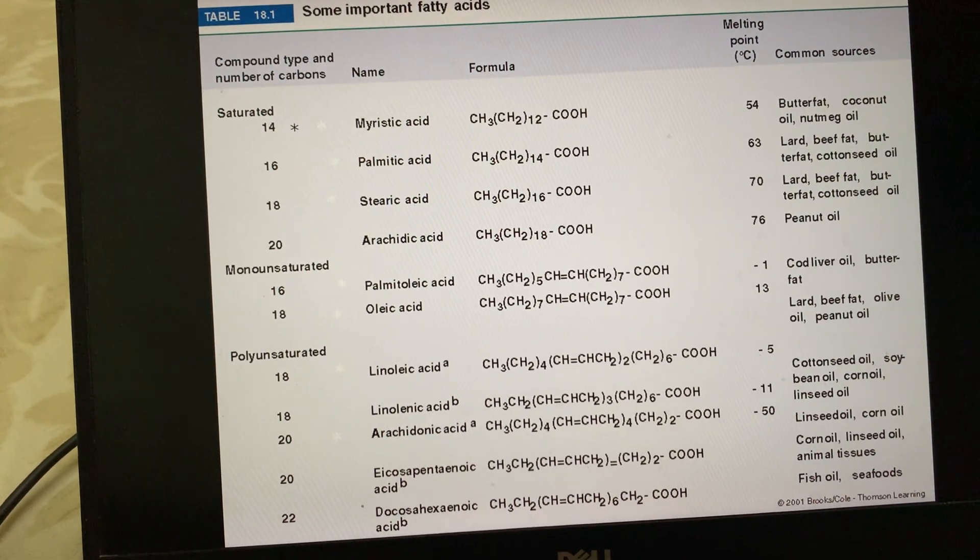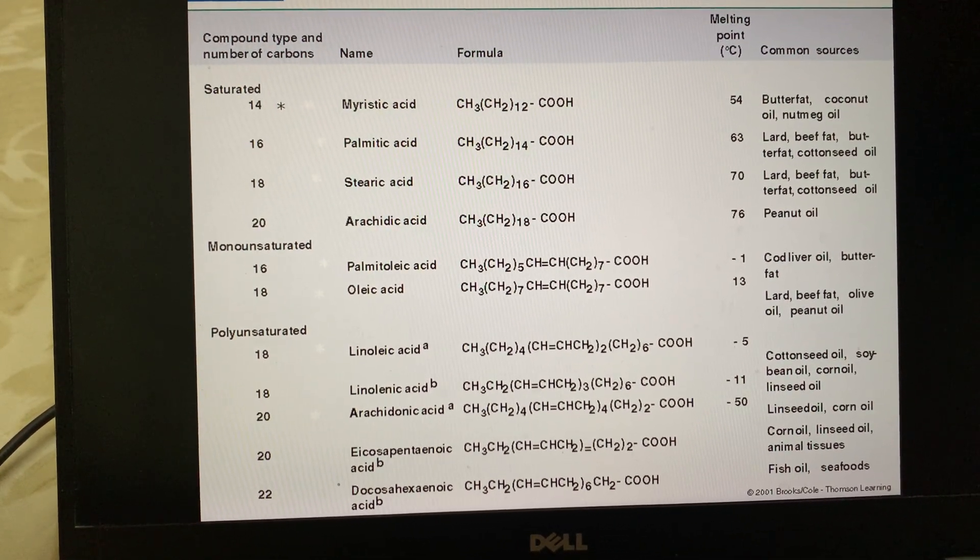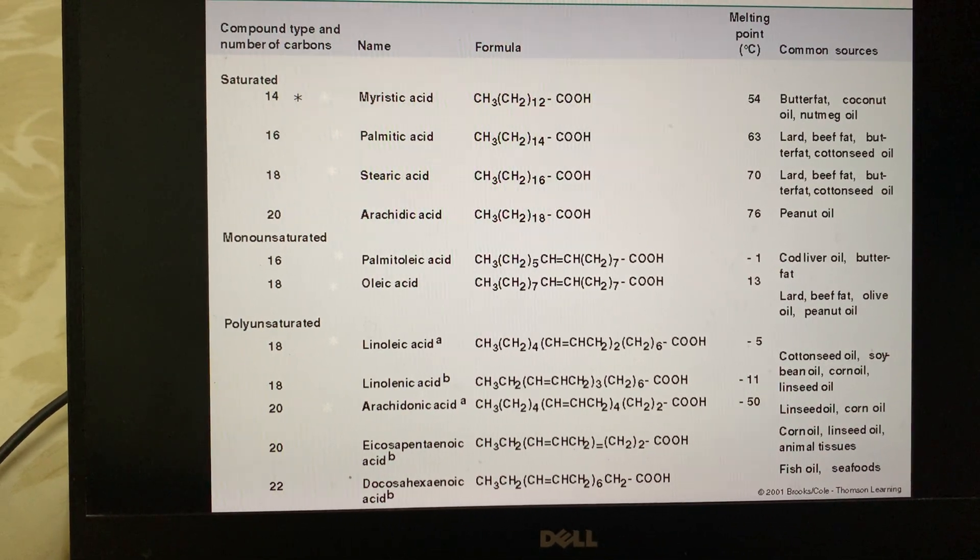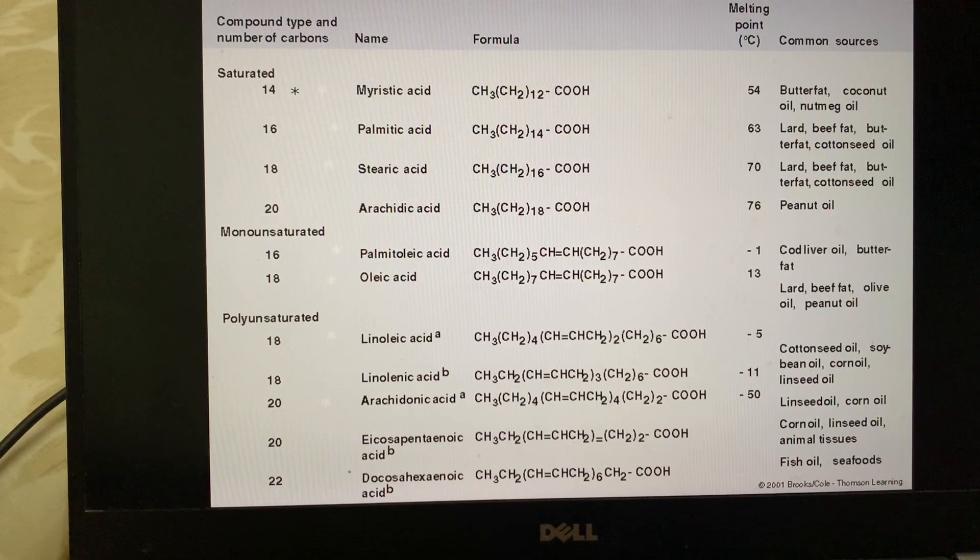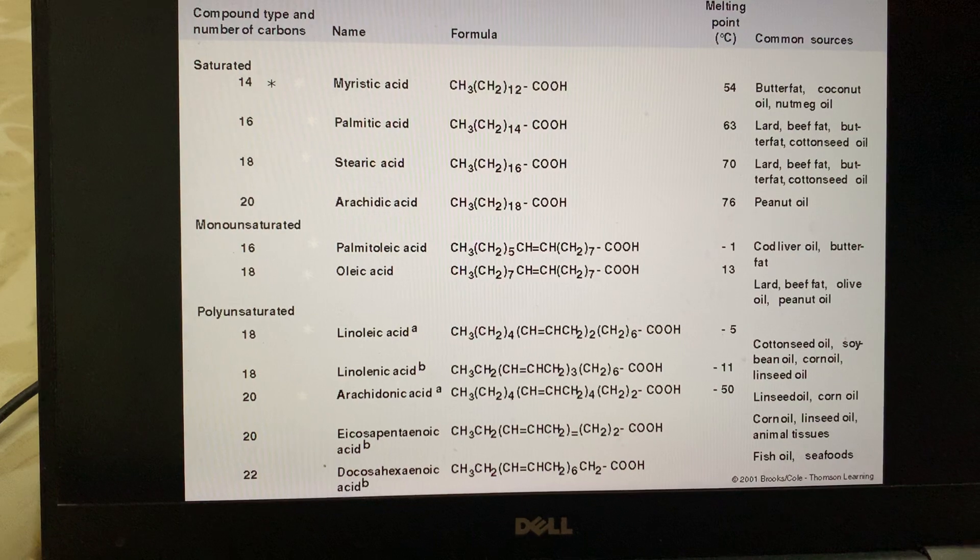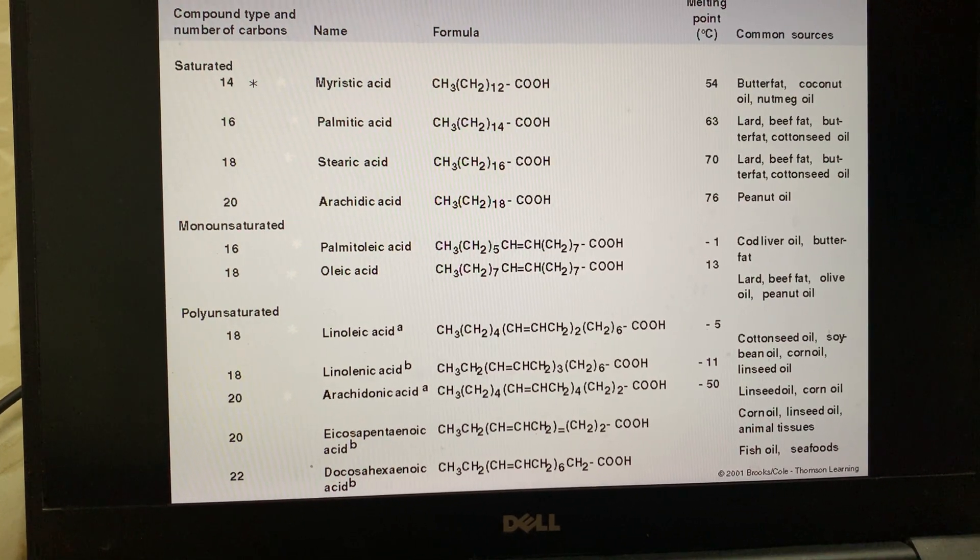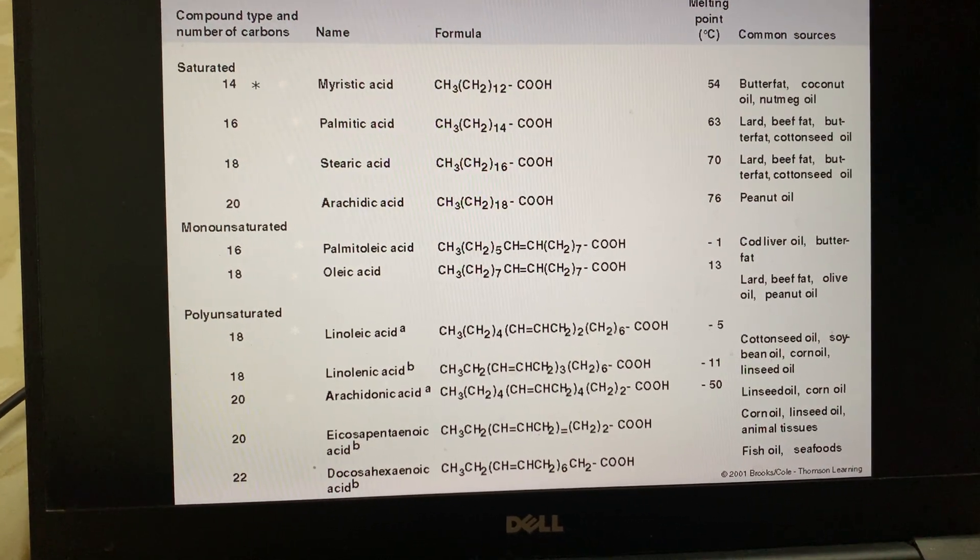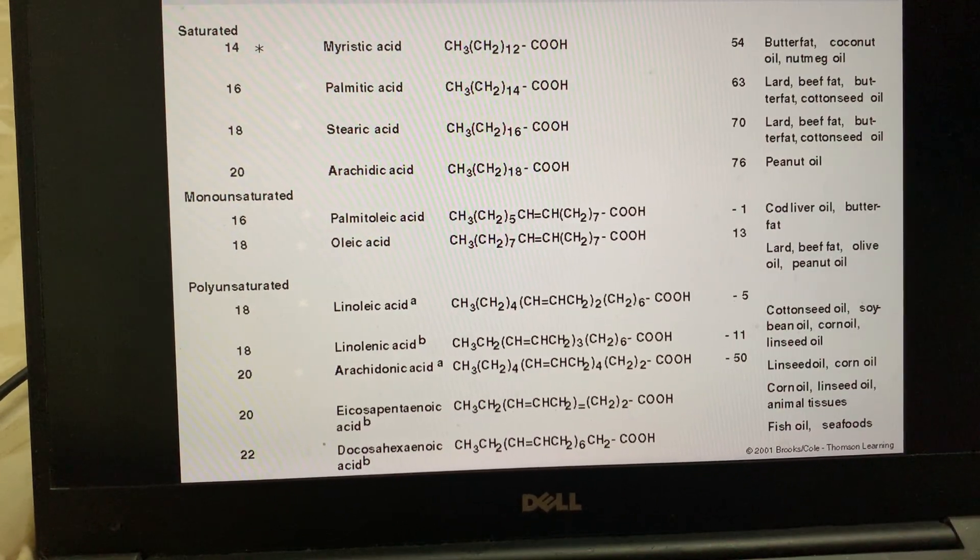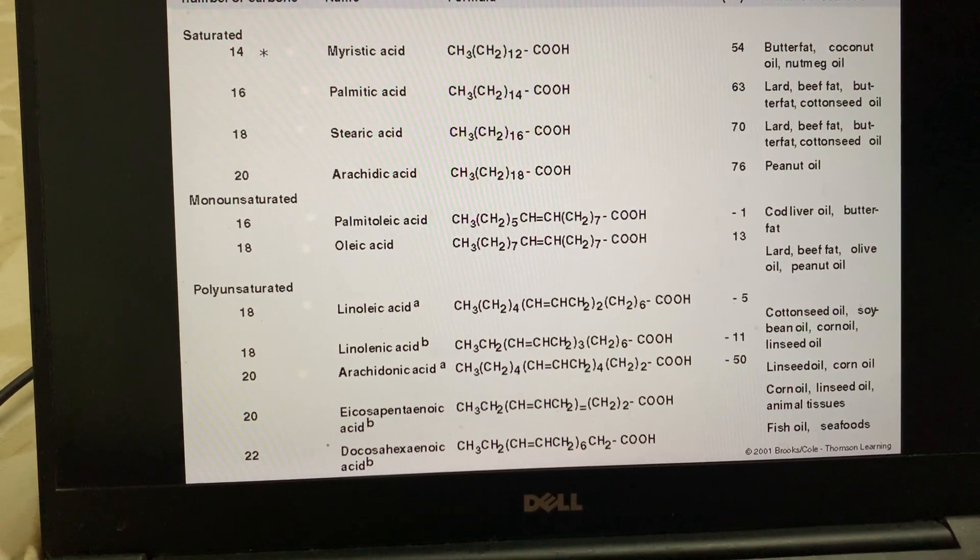These are some important fatty acids based on the number of carbons. Saturated ones have no unsaturation, no double bonds, with 14, 16, 18, or 20 carbons, and their common sources and melting points are listed. The melting points are higher compared to those with unsaturations. Monounsaturated fatty acids like palmitoleic acid and oleic acid have unsaturations, and their melting points are minus 1 and 13 degrees.